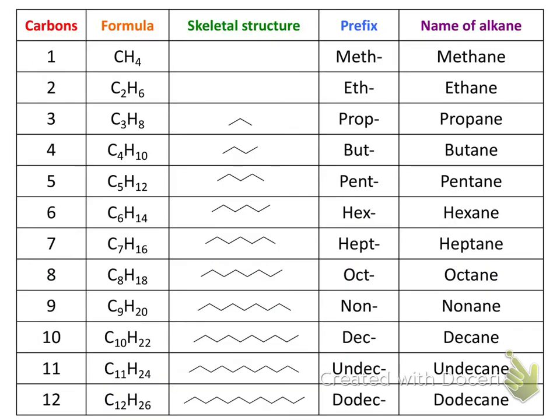We have a table of the prefixes for 1 through 12 carbon chains, ever so important when naming alkanes, alkenes, and alkynes. We also have the respective names of the alkanes. With only single bonds and 1 through 12 carbons, we get: methane, ethane, propane, butane, pentane, hexane, heptane, octane, nonane, decane, undecane, or dodecane, respectively. Now let's use these to actually come up with some names.